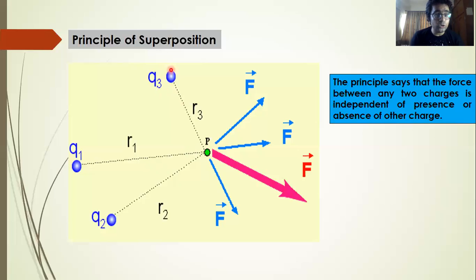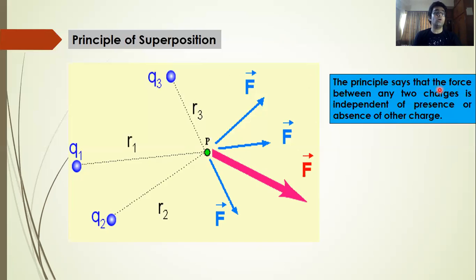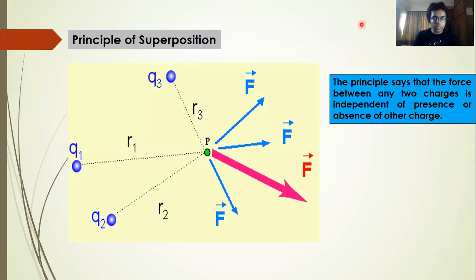That means, whether or not Q3 is present, the force between Q1 and P remains the same. Similarly, whether or not Q2 or Q1 is present, the force between Q3 and P remains unchanged. The force between any two charges — between Q3 and P, between Q1 and P, or between Q2 and P — is independent of the presence or absence of the third charge. There will be no effect on the magnitude of the force.